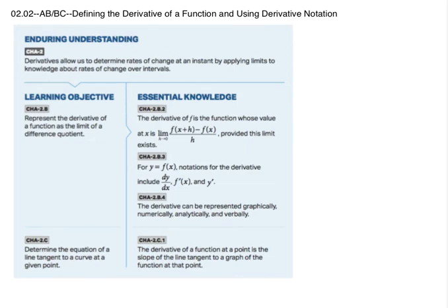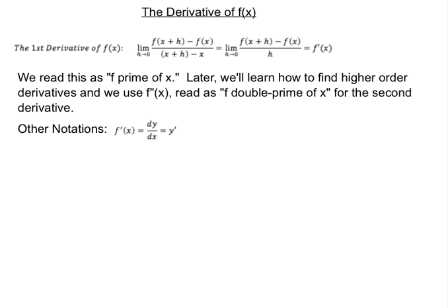The derivative of f of x — the first derivative — is given by the limit as h approaches 0 of f of x plus h minus f of x, all over h. That is called f prime of x. Later in Unit 3 we'll learn how to find higher-order derivatives like f double prime for the second derivative or f triple prime for the third derivative.